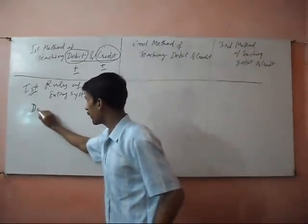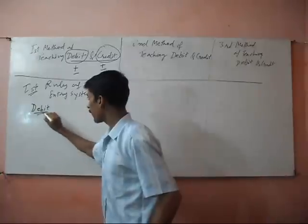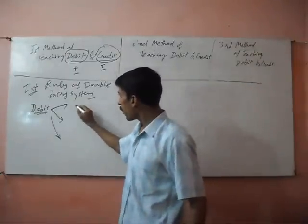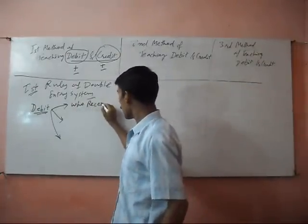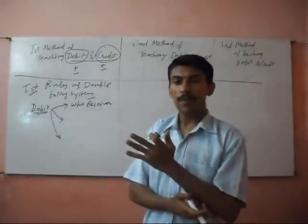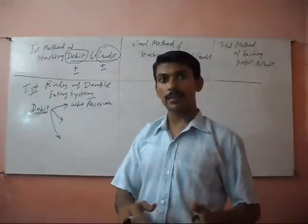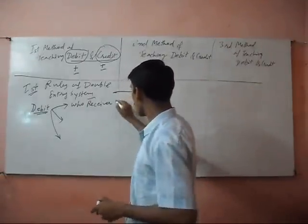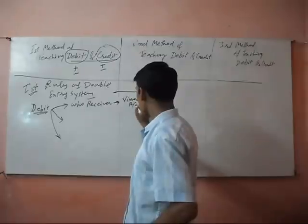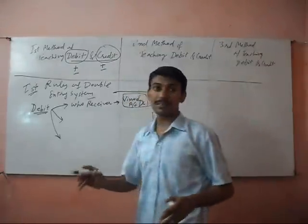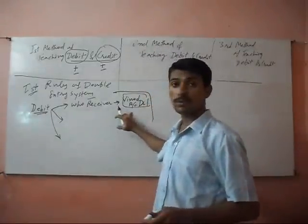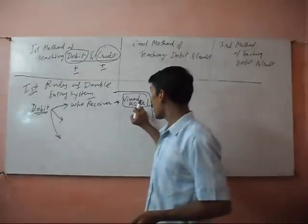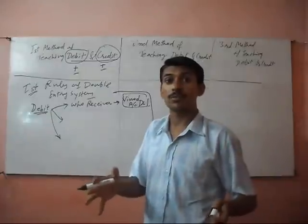First, debit — who is a receiver? Suppose I get goods from your business. My name is Vinod. I am a receiver, so Vinod account is debit because I received the goods from your company. In the books of your company, you will write me as debit, because I got goods on the credit basis. I am your company's customer.